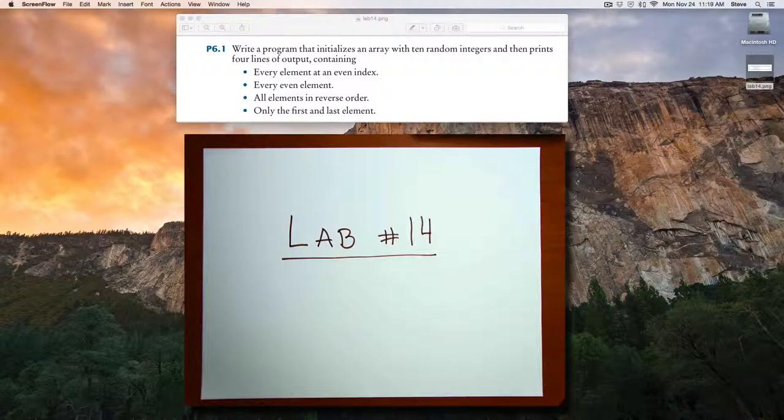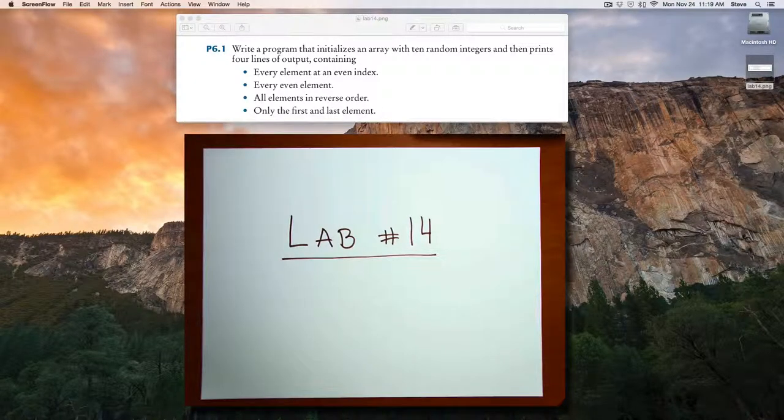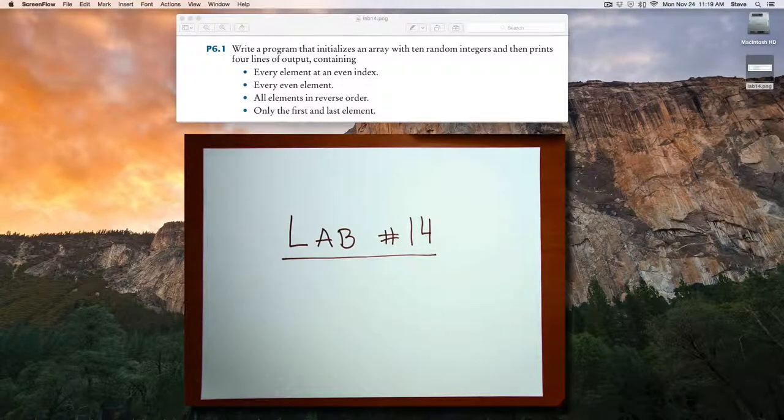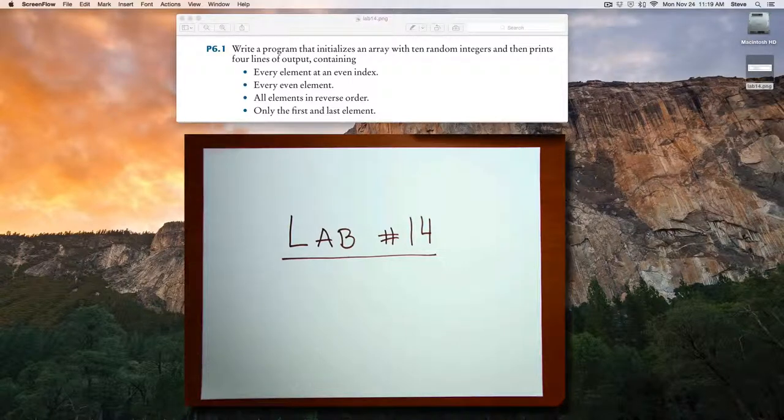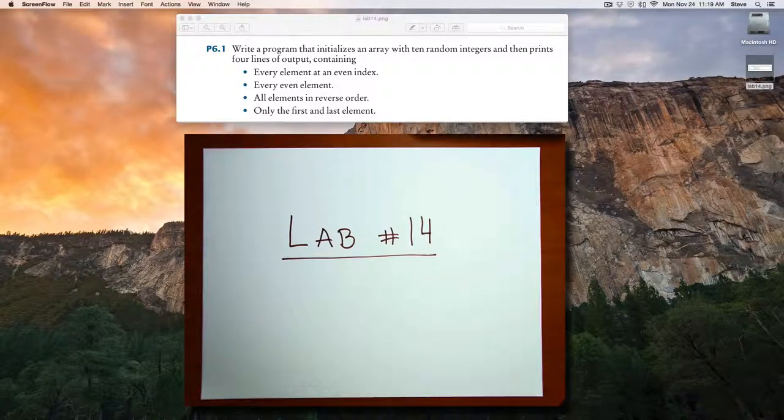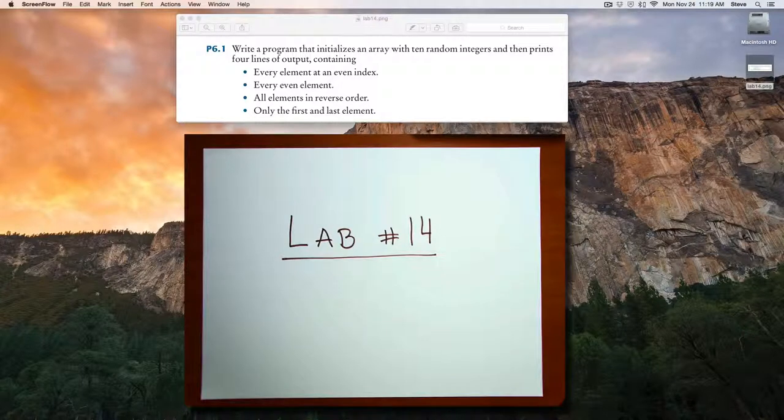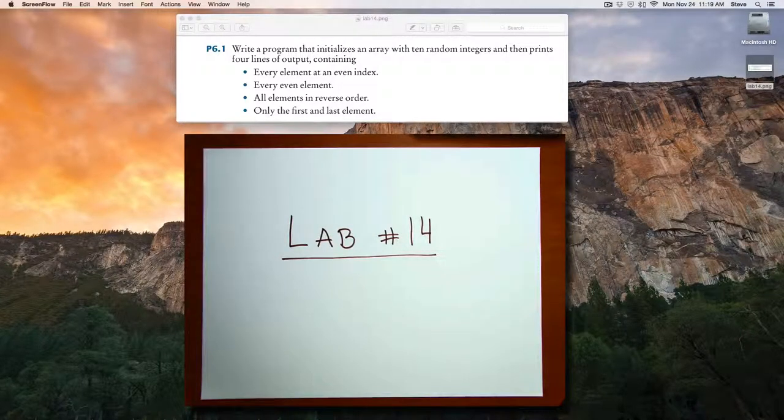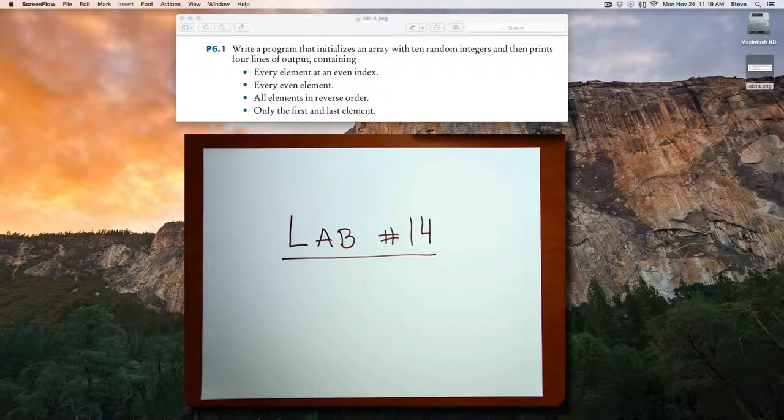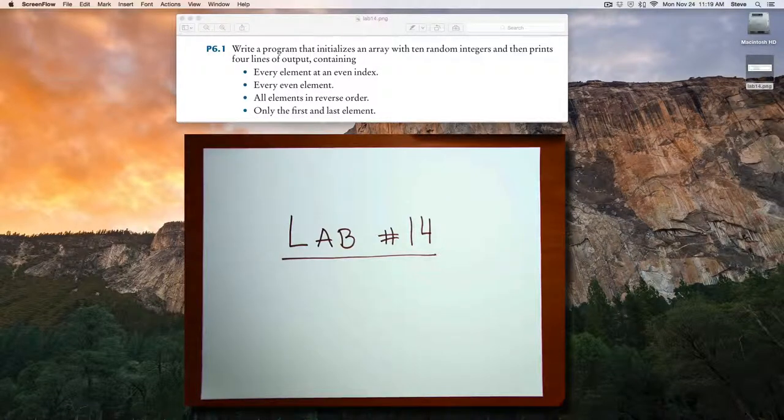For this exercise, I'd like you to complete the following program from textbook 6.1. Write a program that initializes an array with 10 random integers and then prints four lines of output containing every element at an even index, every even element, all elements in reverse order, and only the first and last element.